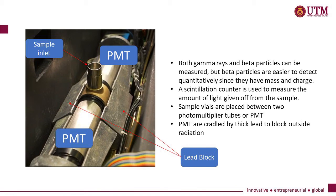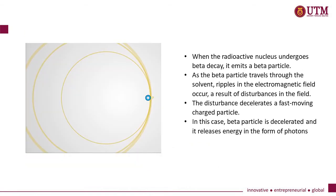Sample wires are placed between two photomultiplier tubes, or PMTs, and cradled by a thick lead shield to block outside radiation. When the radioactive nucleus undergoes beta decay, it emits a beta particle. As the beta particle travels through the solvent, disturbance in the electromagnetic field occurs.